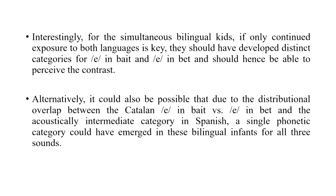By eight months, Spanish monolinguals would have lost the ability to perceive this Catalan-specific contrast since it is not relevant to Spanish. Interestingly, for simultaneous bilingual kids, if only continued exposure to both languages matters, they should have developed distinct categories for both vowels and be able to perceive the contrast. Alternatively, it could also be possible that due to the distributional overlap between the Catalan vowels and the acoustically intermediate category in Spanish, they could fuse everything together and come up with a single phonemic category. Let us see what the results tell us.